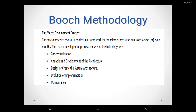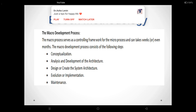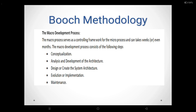During conceptualization, we establish the core requirements of the system. We establish system goals and develop a prototype to prove the concept. The second step is analysis and development of architecture. In this step, we use the class diagram to describe the roles and responsibilities of objects to be carried out in performing tasks.